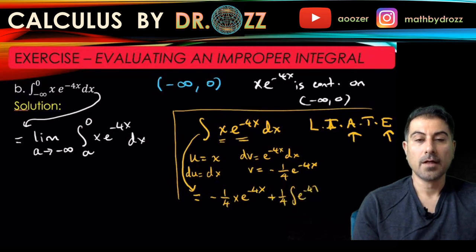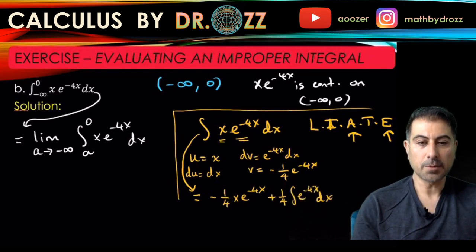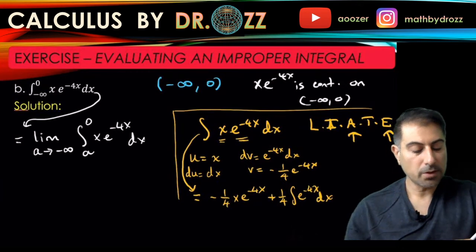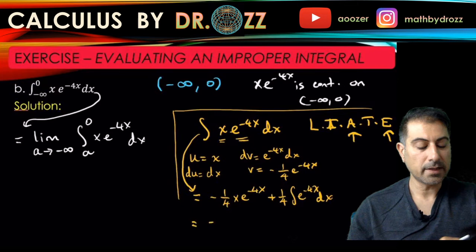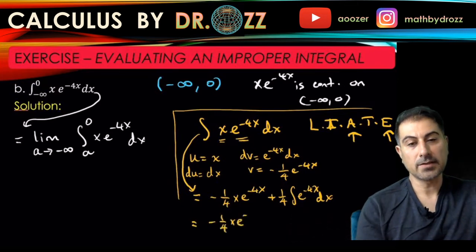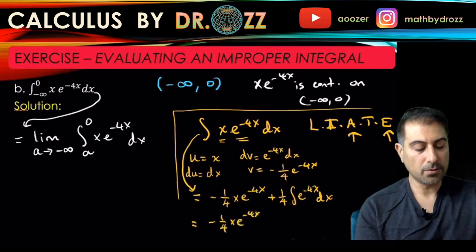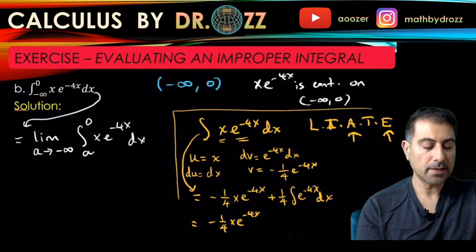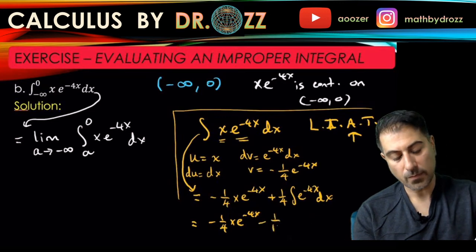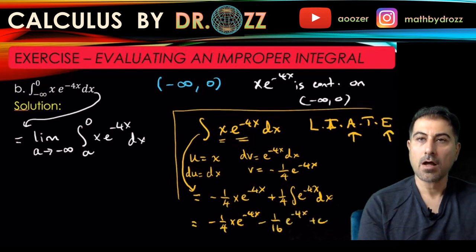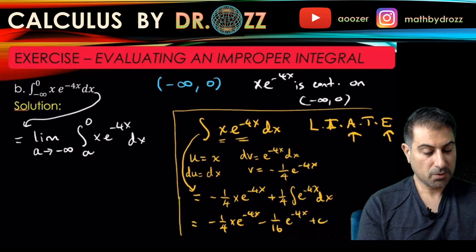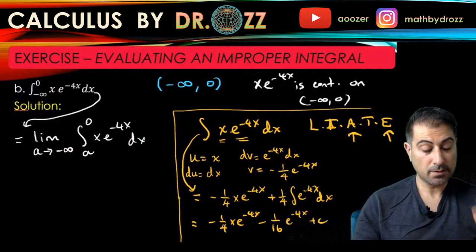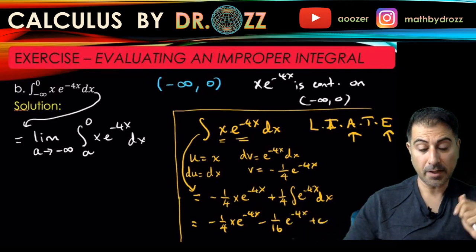We have one more integral to handle. The integral of e^(−4x) is −(1/4)e^(−4x), but with the (1/4) factor outside, it becomes −(1/16)e^(−4x). So the full antiderivative is −(1/4)·x·e^(−4x) − (1/16)·e^(−4x) + C.